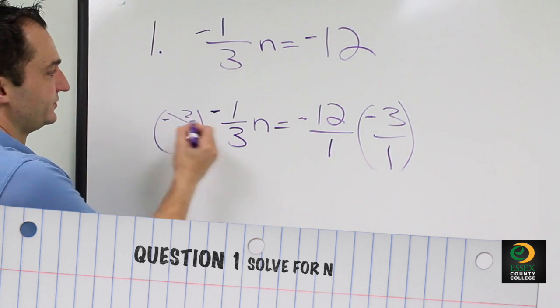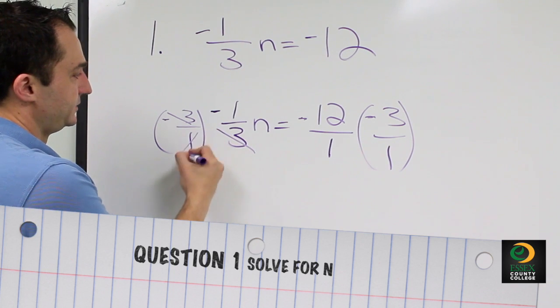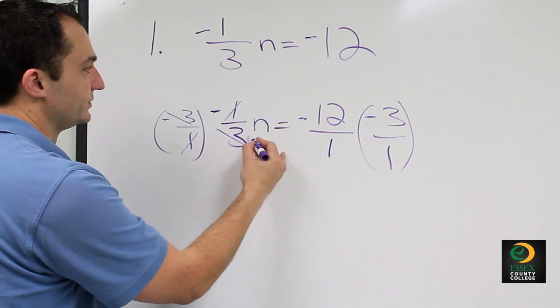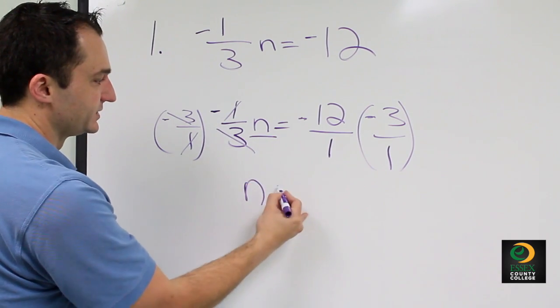Then the 3's and 3's cancel out, the 1's and 1's cancel out, and the negative times a negative gives us a positive. So the only thing we're left with on the left hand side is n.